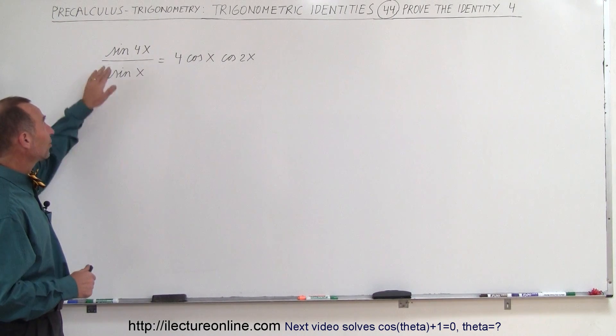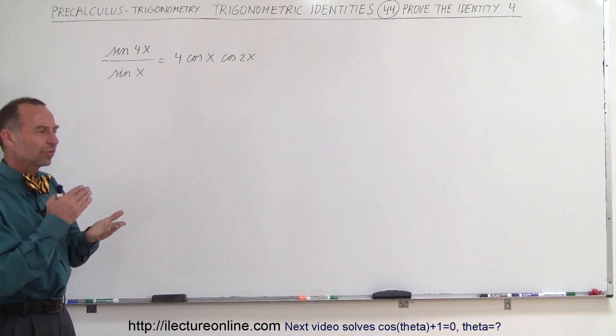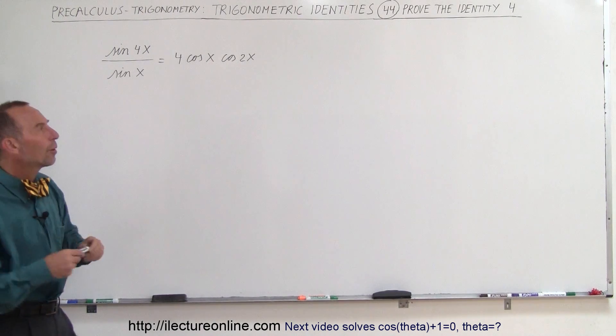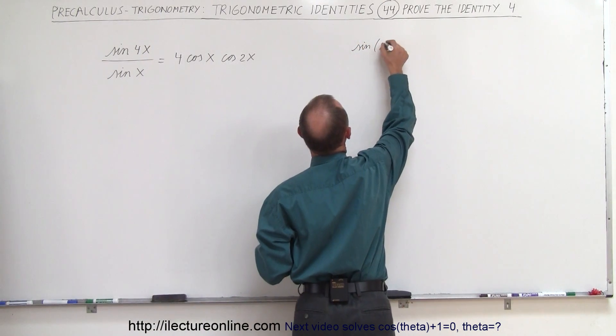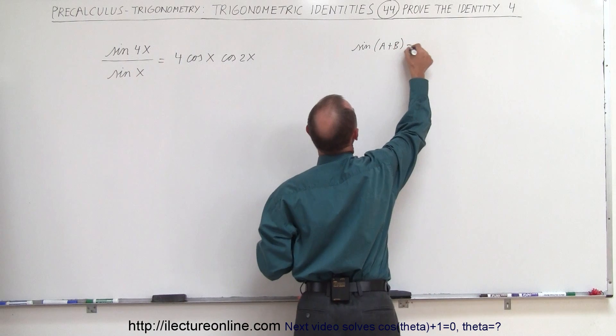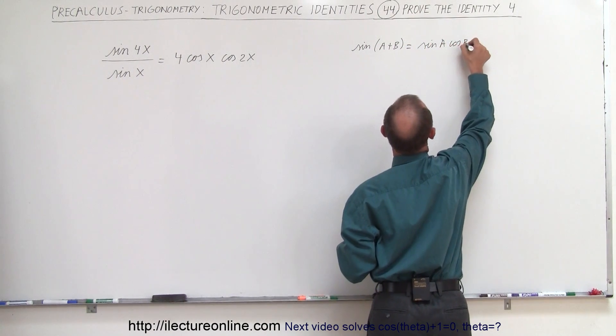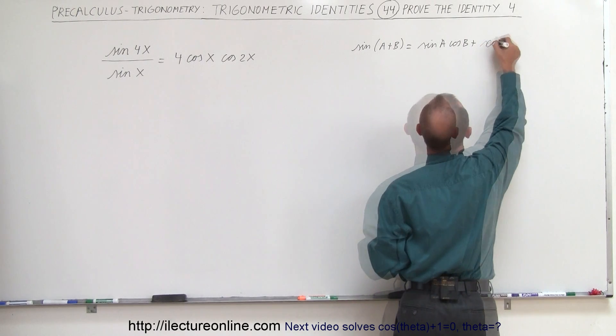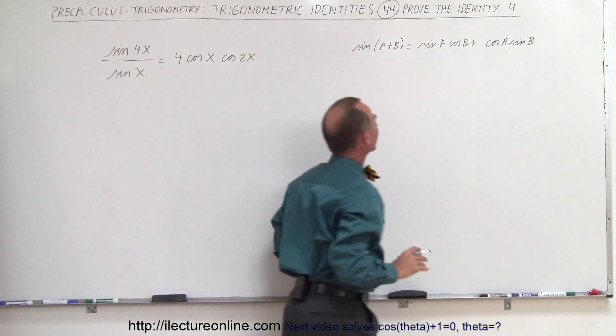But maybe here since we have the sine of 4x, maybe we can write it as the sine of 2x plus 2x because the sine of a plus b, we know what the equation is for that, let's write that down. So we have the sine of a plus b that is equal to the sine of a times the cosine of b plus the cosine of a times the sine of b. It's more commonly written like that.